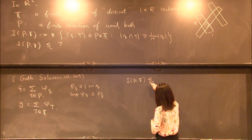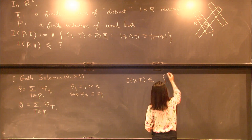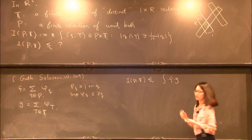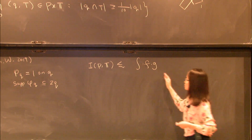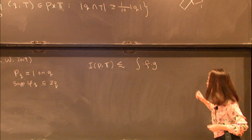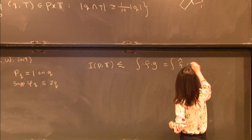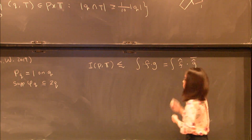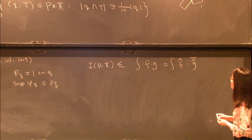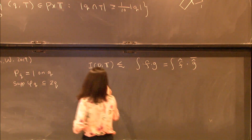We can rewrite the number of incidences by an integral — it's less than or equal to a constant factor of the integral of f times g. By writing the number of incidences as an integration, we can take the Fourier transform. The next step is to study what the Fourier transform of g is.